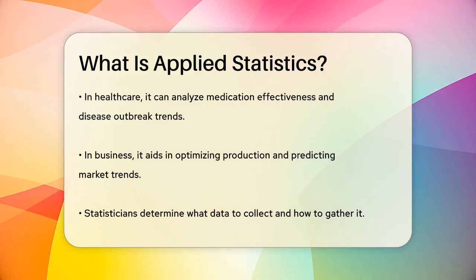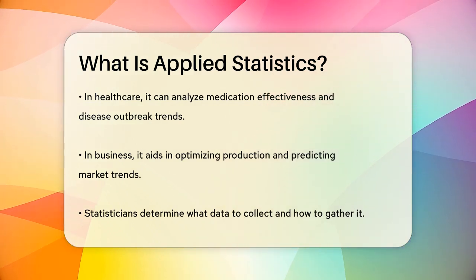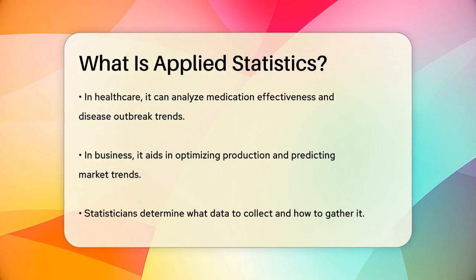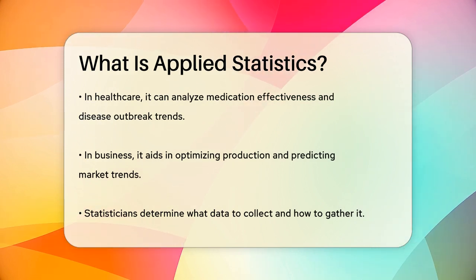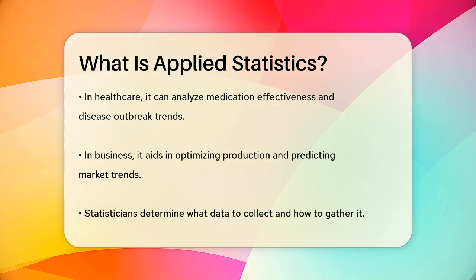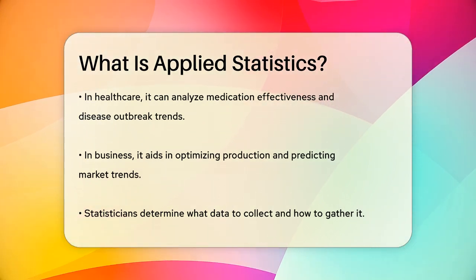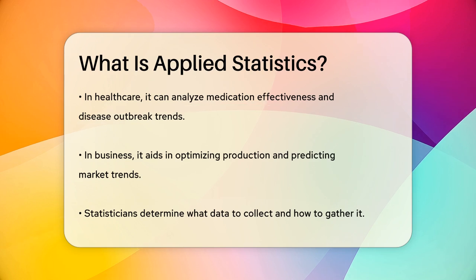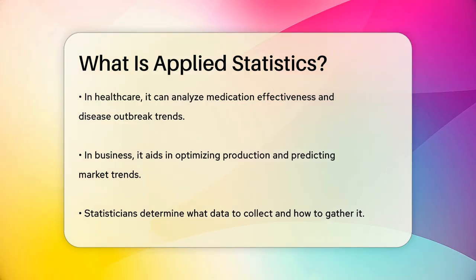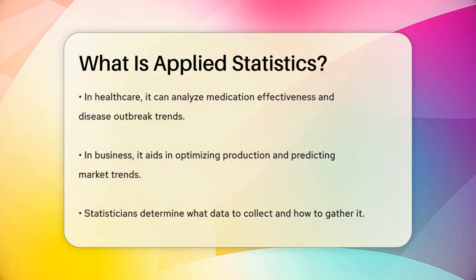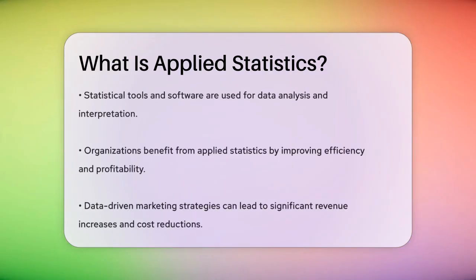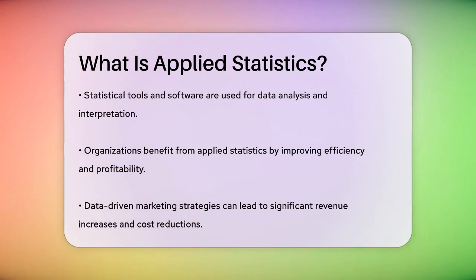In business, they could use data to optimize production processes or to predict market trends. Statisticians who work in Applied Statistics decide what data they need to collect, how to collect it, and then use statistical tools and software to analyze and interpret the data.